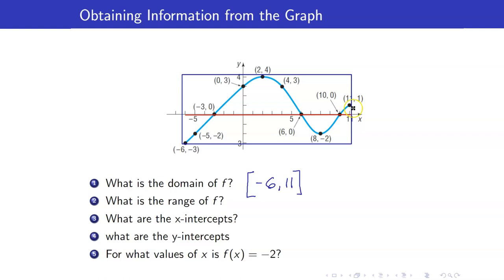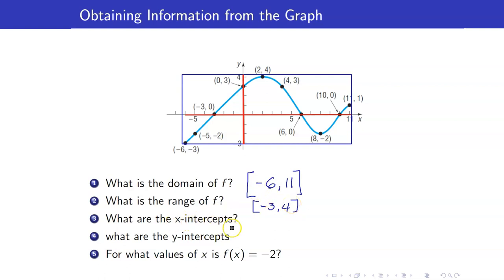For the range of f, look at the part of the y-axis that is covered. That is the interval from negative 3 up to 4. The x-intercepts are negative 3, 6, and 10. The y-intercept is the point where the graph crosses the y-axis, which is (0, 3), so y equals 3.